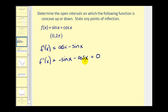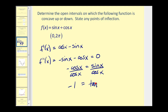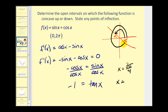We have two different trig functions, so we can add sine x to both sides, then divide by cosine x on both sides. What we're left with is negative one equals — remember — sine x divided by cosine x is tangent x. So we want to know when tangent x is equal to negative one on the open interval from zero to two pi. A tangent value of negative one corresponds to a 45-degree reference angle. Since the tangent is negative, we sketch a 45-degree reference angle in the second and fourth quadrant. Therefore, the second derivative is zero when x equals three pi over four, and also when x equals seven pi over four.